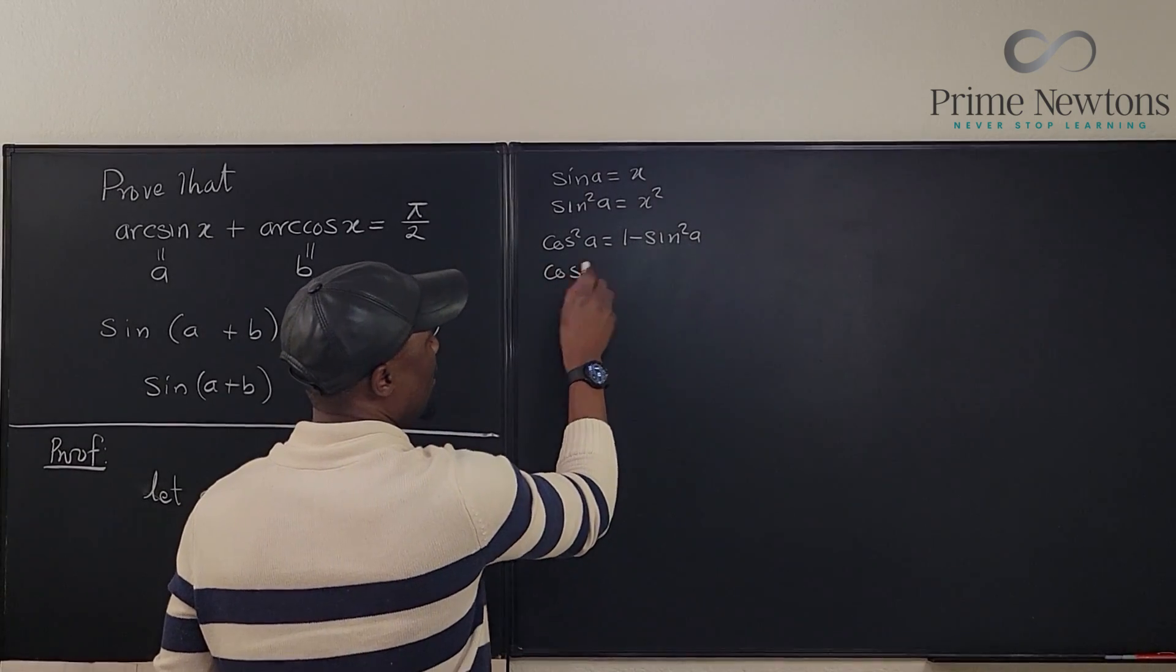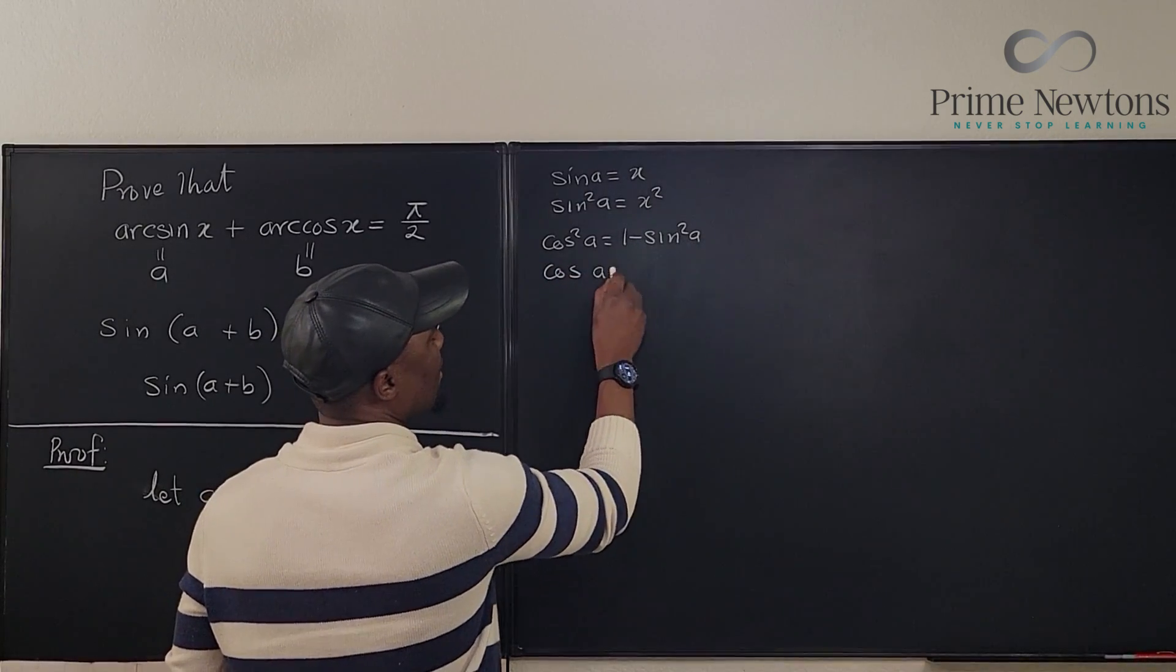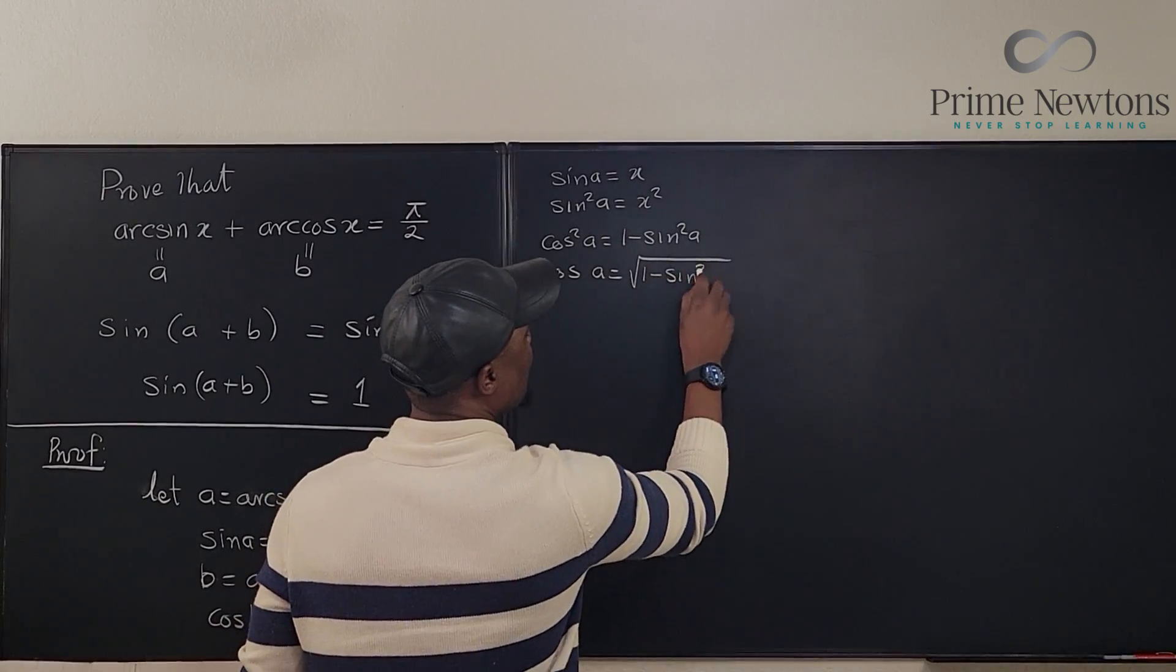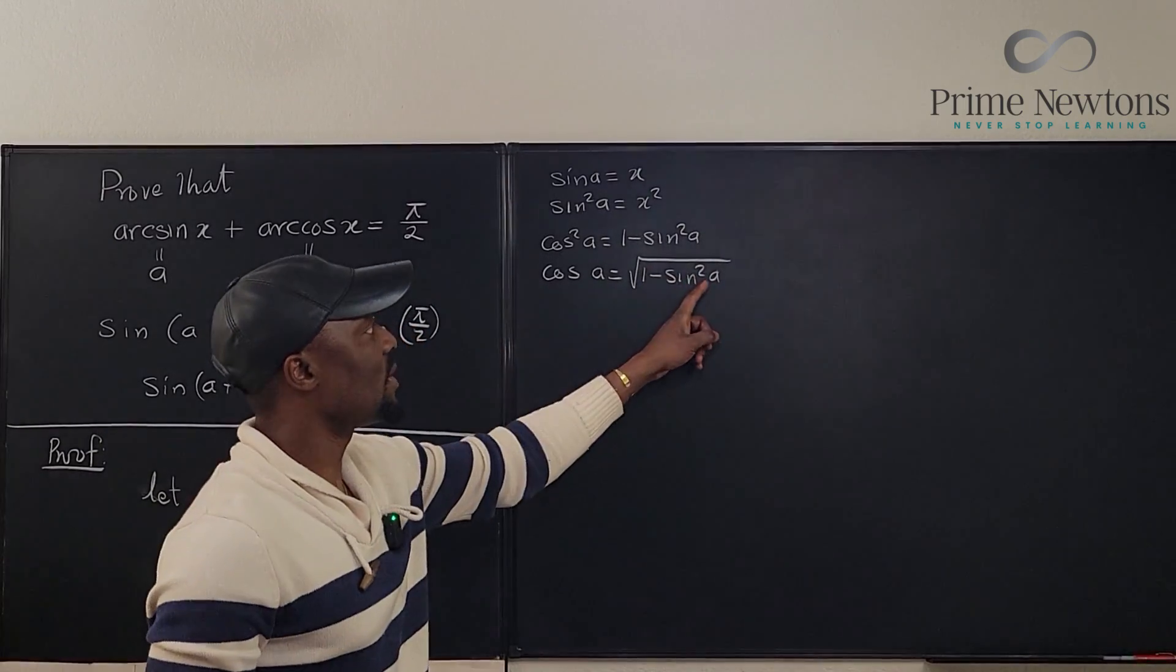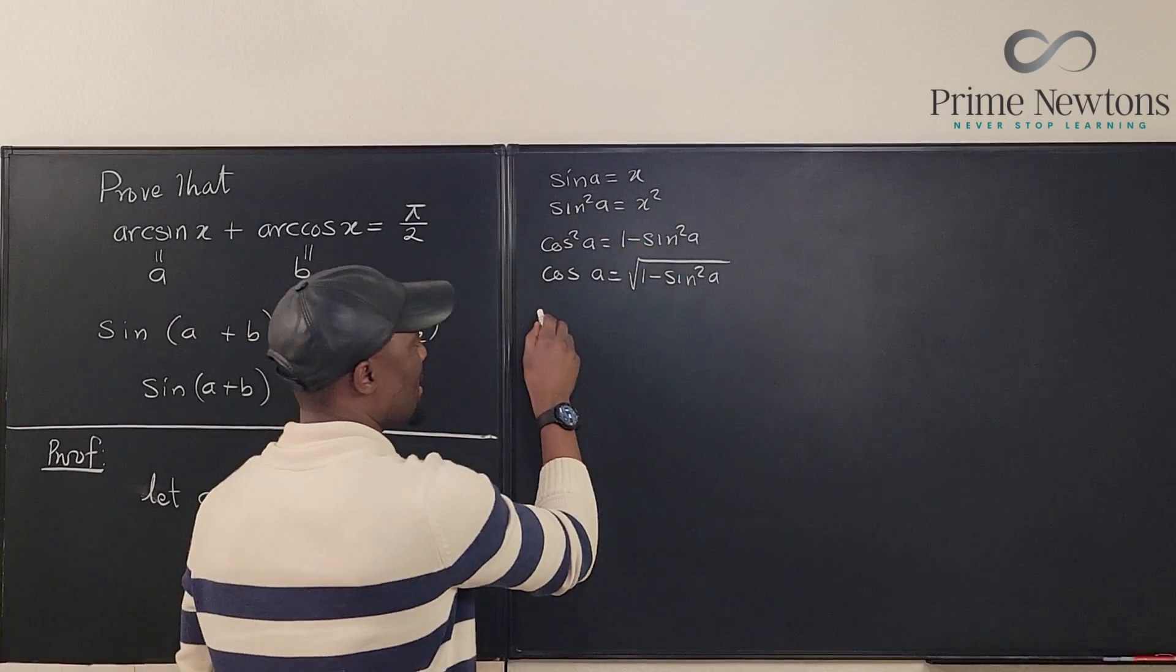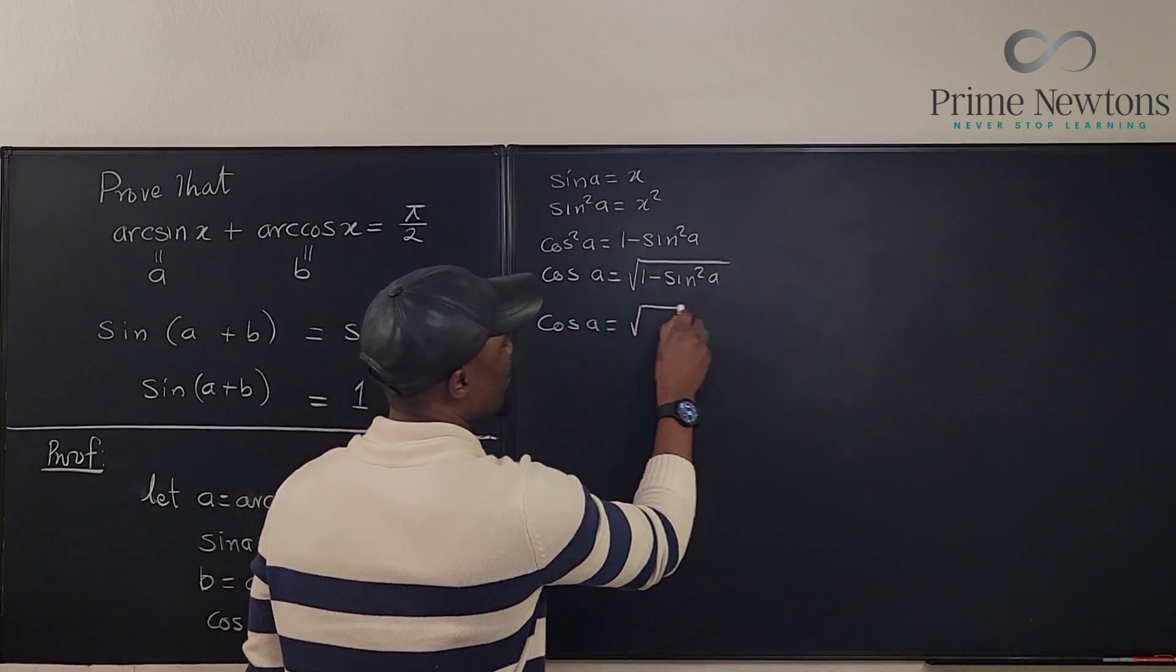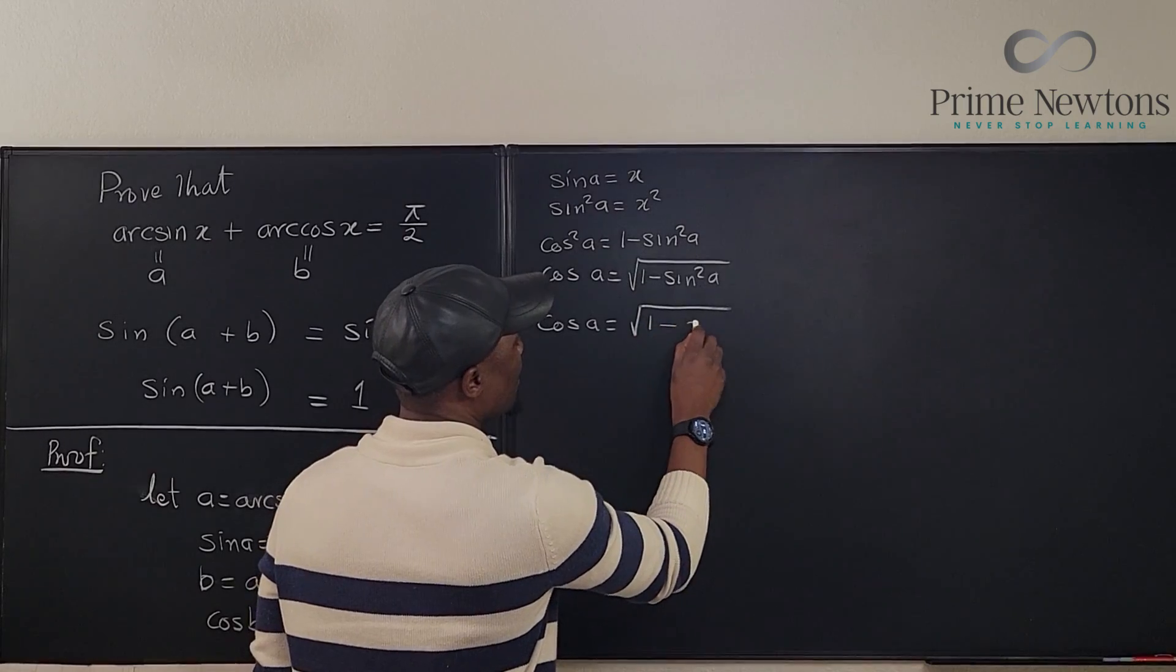So that cosine a will be equal to the square root of 1 minus sine squared a. But we know that sine squared a is x squared. So we know that cosine a is equal to the square root of 1 minus x squared.